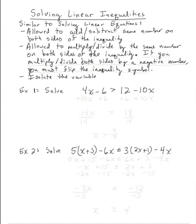Solving linear inequalities. If we're using a symbolic method for solving linear inequalities, it's really similar to when we were solving linear equations. We are allowed to add or subtract the same number on both sides of the inequality. We are allowed to multiply or divide by the same number on both sides of the inequality.